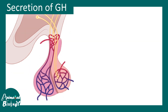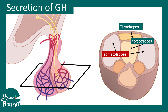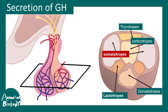Growth hormone, or somatotrophin, is secreted from the anterior part of the pituitary gland. If we cut a cross section of the anterior pituitary, we see different zones named as thyrotrophs, somatotrophs, corticotrophs, lactotrophs, gonadotrophs, etc. Among them, the somatotroph is the region which secretes growth hormone.